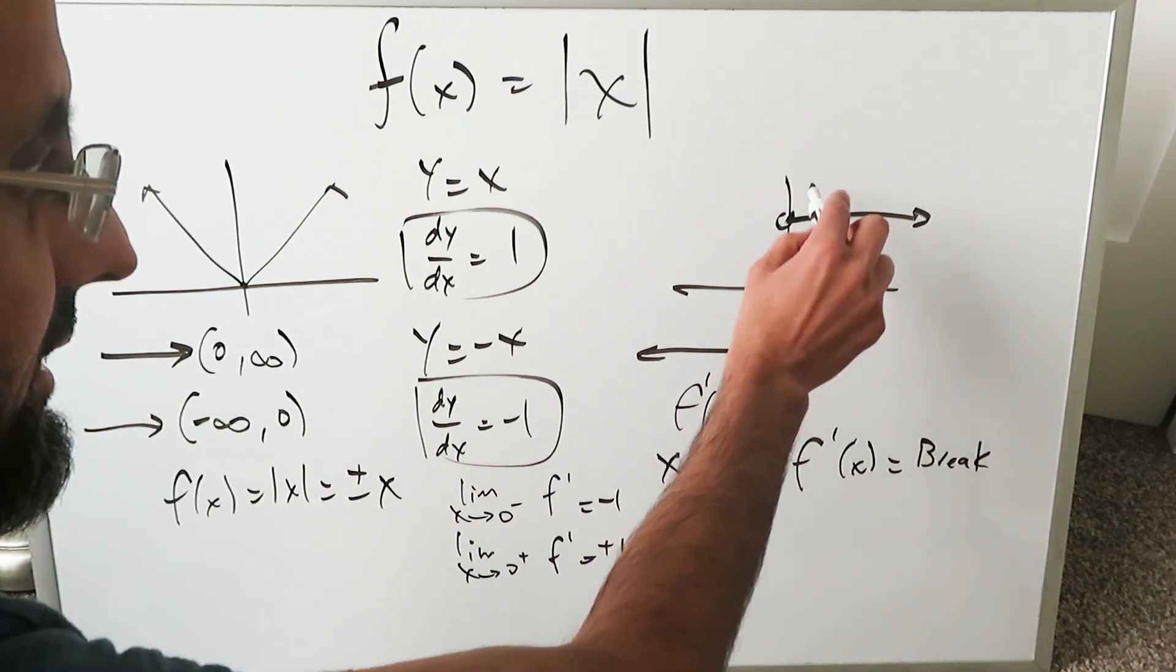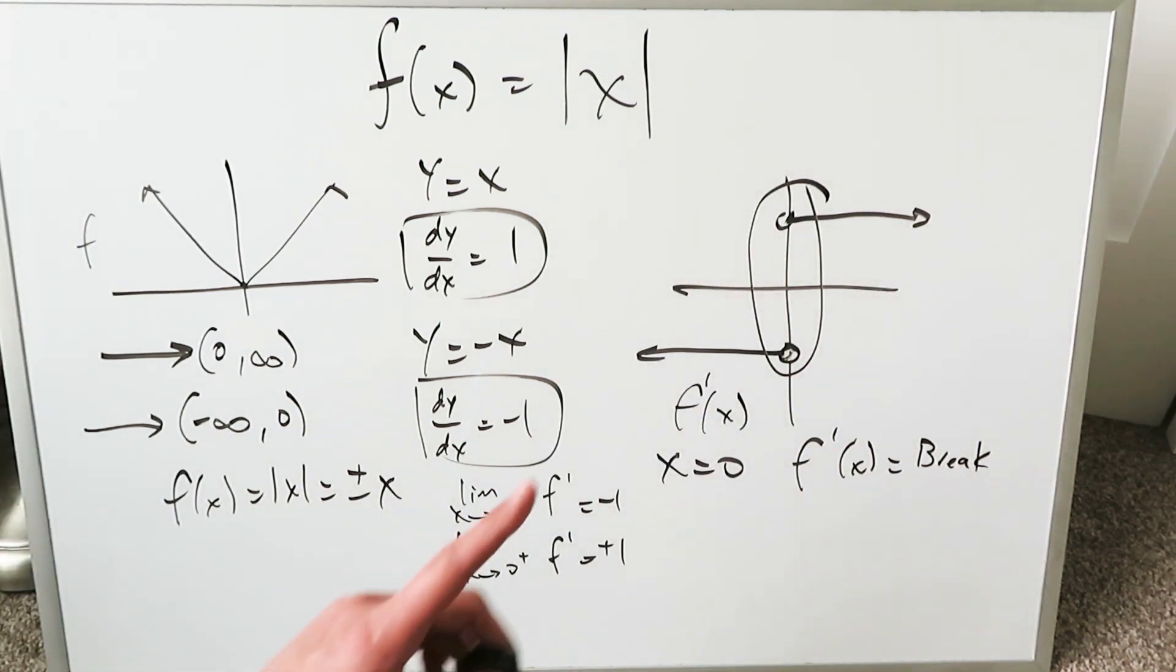Therefore there is no derivative at the value x equals 0. You can see here clearly, by means of a discontinuity in the derivative graph, there can be no derivative at this point, x equals 0. That's what I'm showing you here. Have a good day.